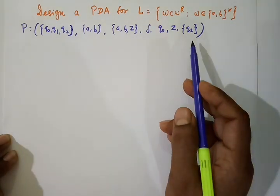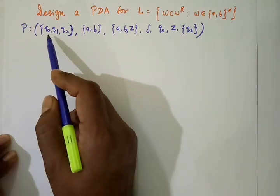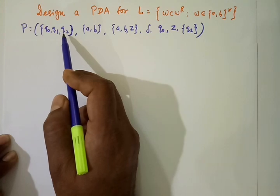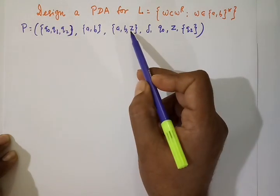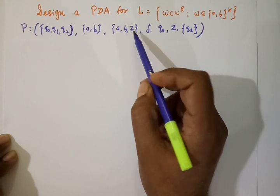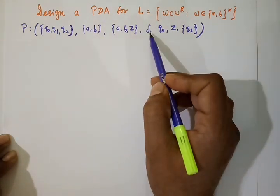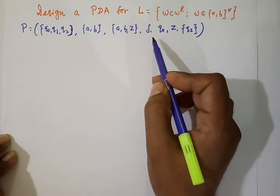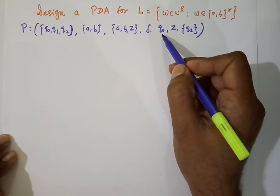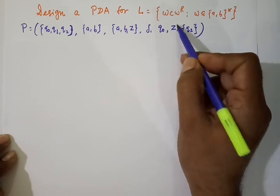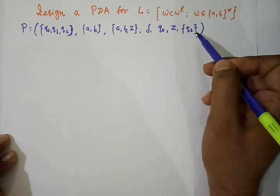Here are the components of our PDA: Q0, Q1, and Q2 are states; A and B are input alphabets; A, B, and Z are stack symbols — we are pushing A for A and B for B. Delta is our transition function. Q0 is our initial state, Z is the bottom stack marker, and Q2 is our final state.